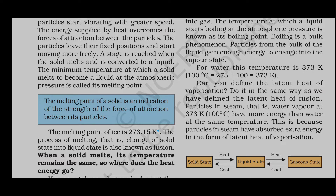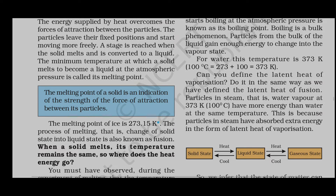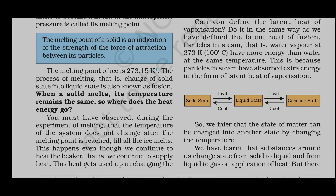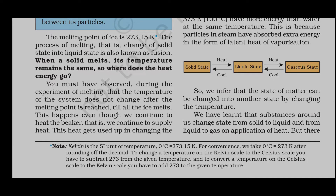The particles leave their fixed position and start moving freely. This is the melting point. The melting point is the minimum temperature at which a solid melts to become liquid at atmospheric pressure. For ice this is 273 Kelvin, which is 0 degree Celsius. This process of melting — the change of state from solid to liquid — is also known as fusion.